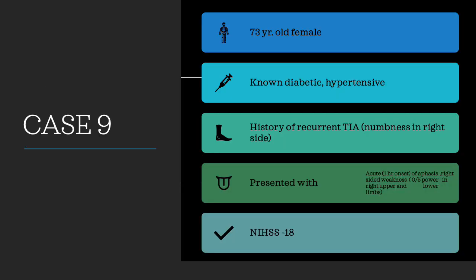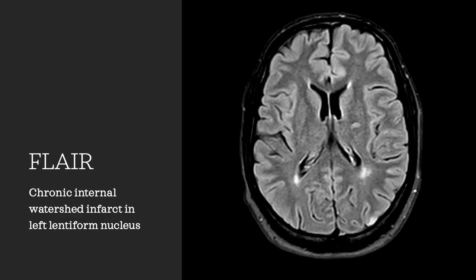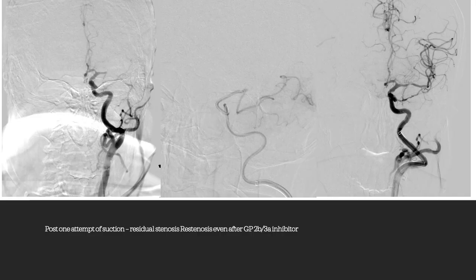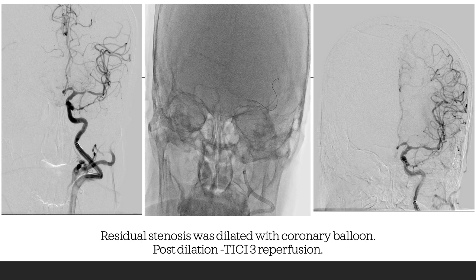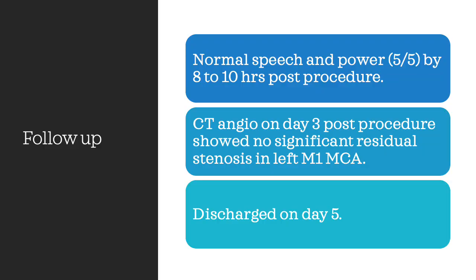Case 10: Known diabetic with history of TIA. Angio shows absent M1 — acute stroke but with old infarcts on MRI, suggesting underlying ICAD with occlusion. We opened the vessel; there was residual stenosis, then further plain balloon angioplasty — the vessel stayed open without stenting. The lesson: stop at the least you can do. Without stenting, the patient can be kept on single antiplatelet therapy which is safer. Follow-up showed the patient continued to do well and improved completely over time.